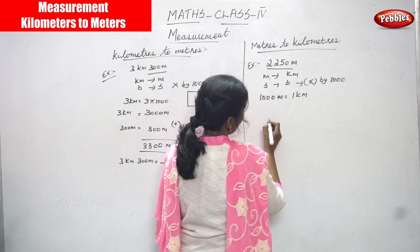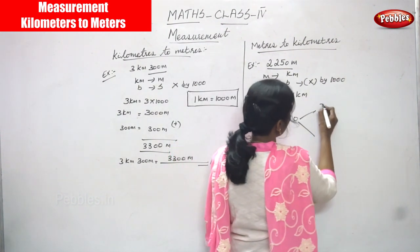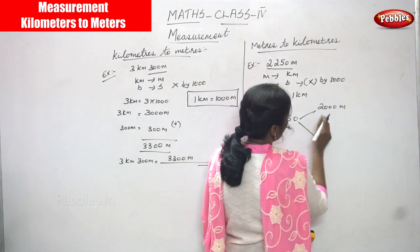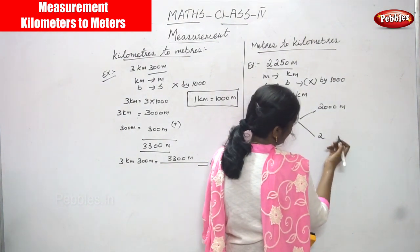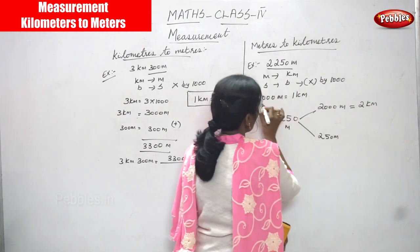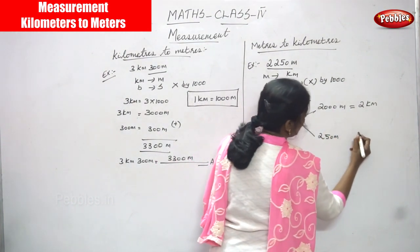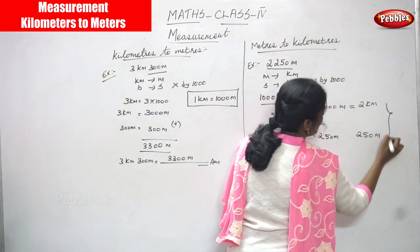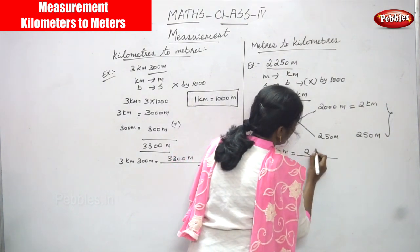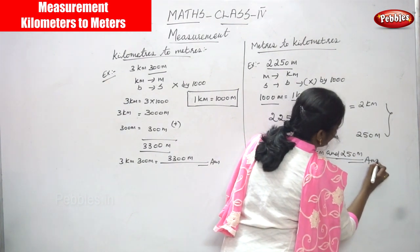The question is 2250 meters. First you have to segregate: 2250 meters is separated into 2000 meters and 250 meters. Now, 2000 meters is equal to 2 kilometers, because 1000 meters equals 1 kilometer. Then you combine: 2 kilometers and 250 meters. So 2250 meters is converted into 2 kilometers and 250 meters — this is the right answer.